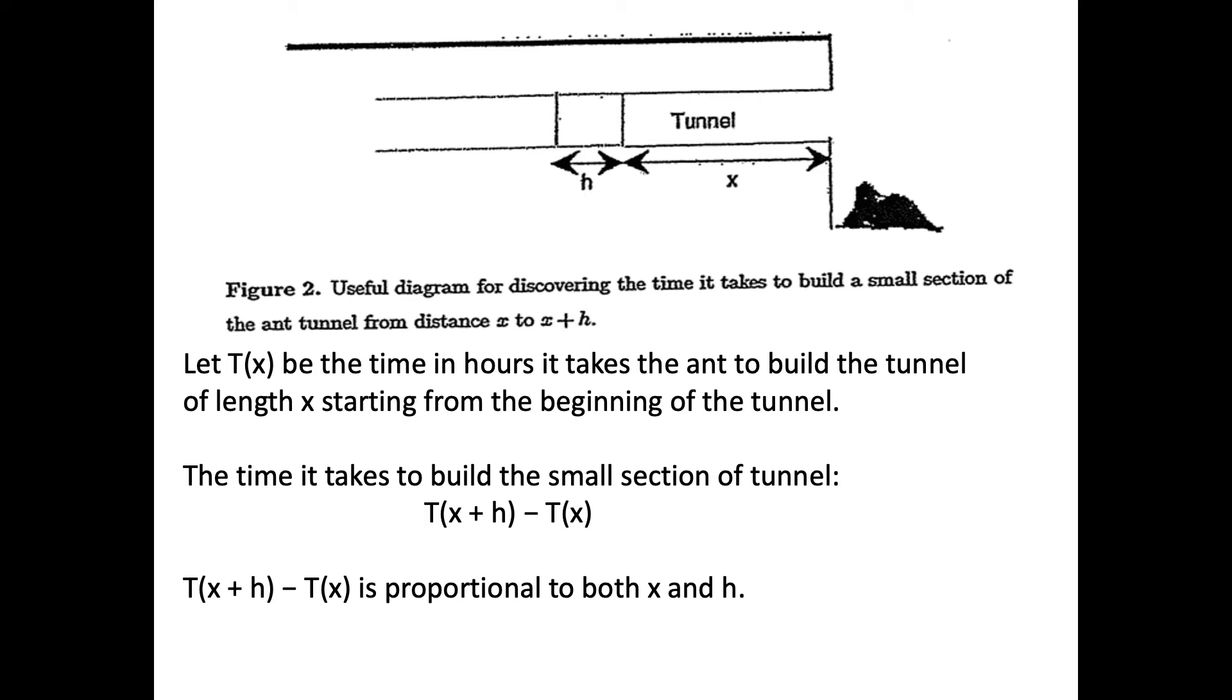We talk about how t of x plus h minus t of x is proportional to both x and h. Because of that, we end up creating a derivative by dividing everything by h and taking the limit as h goes to zero.